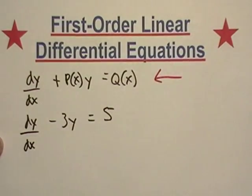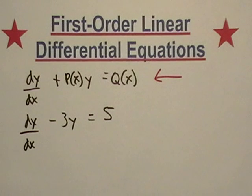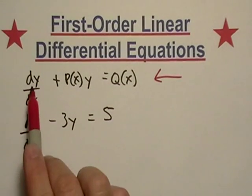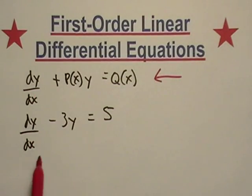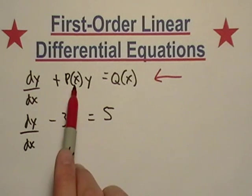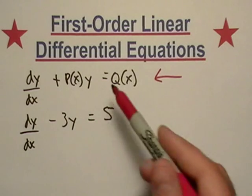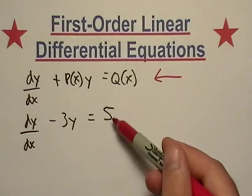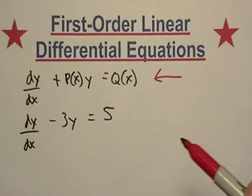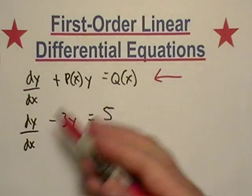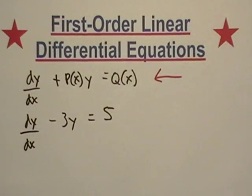First of all, it's got to be in this form. We have a derivative, and P(x) - in this case it's just negative three, which is a function of x, just a horizontal line. We got our y's, and then five, which will be our Q(x). I picked an easy one; it's already in this form and we'll build on this.